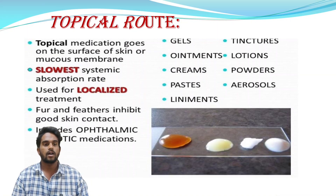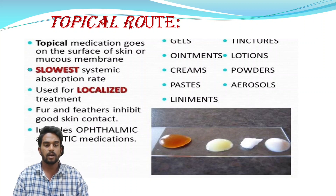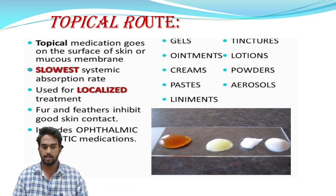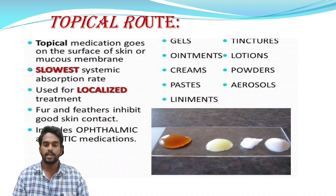Topical routes involve medication applied on the surface of the skin or mucous membrane. They have the slowest systematic absorption rate and are used for localized treatment. Fur and feathers can inhibit good skin contact. This route includes ophthalmic and otic medications.